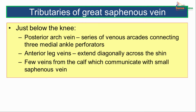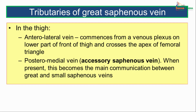Tributaries of the great saphenous vein: just below the knee, the posterior arch vein is seen as a series of venous arcades connecting the three medial ankle perforators and draining into the great saphenous vein. Next are the anterior leg veins, which extend diagonally across the shin and drain into the great saphenous vein. There are also a few veins from the calf which may communicate with the small saphenous vein. In the thigh, the anterolateral vein commences from a venous plexus on the lower part of the front of the thigh and crosses the apex of the femoral triangle before draining into the great saphenous vein.